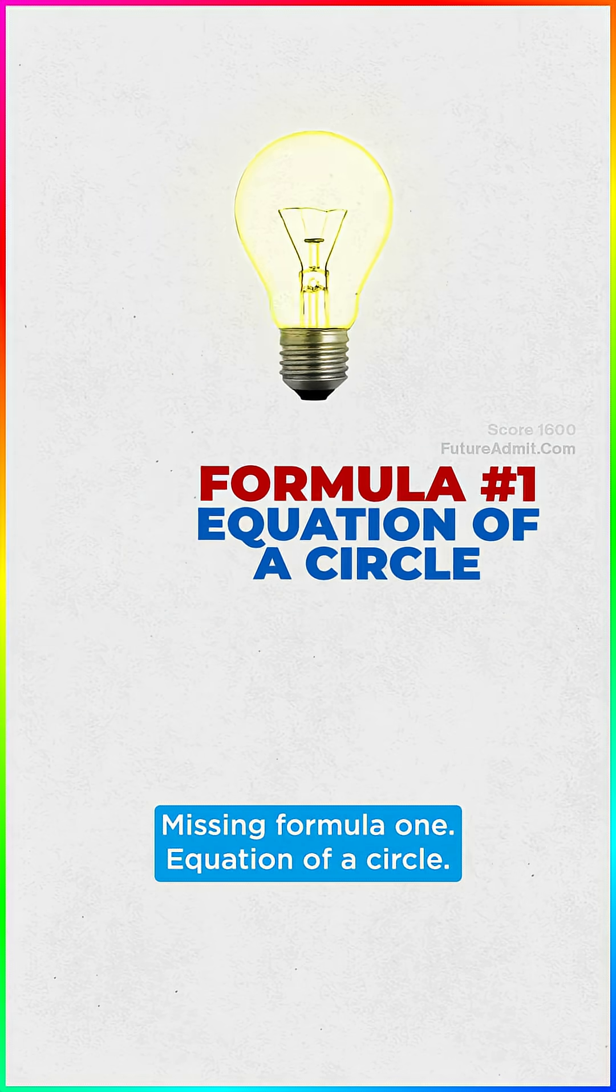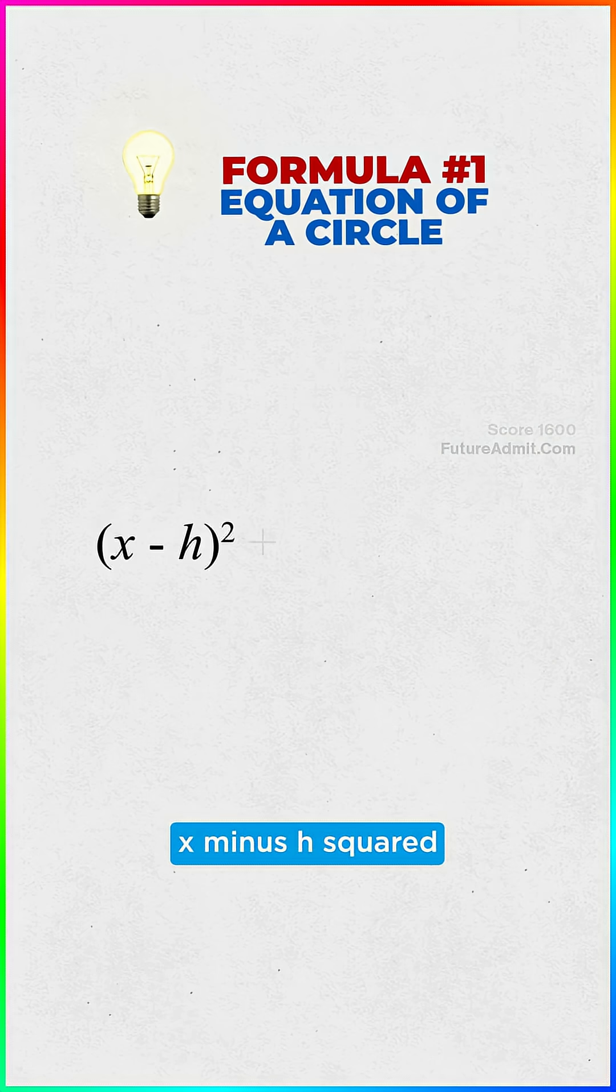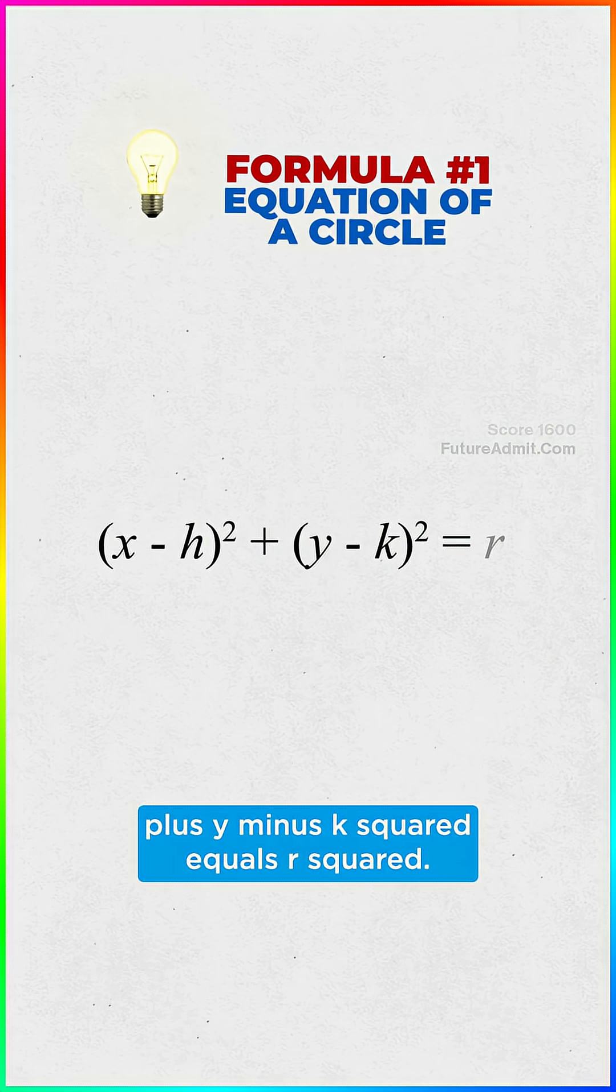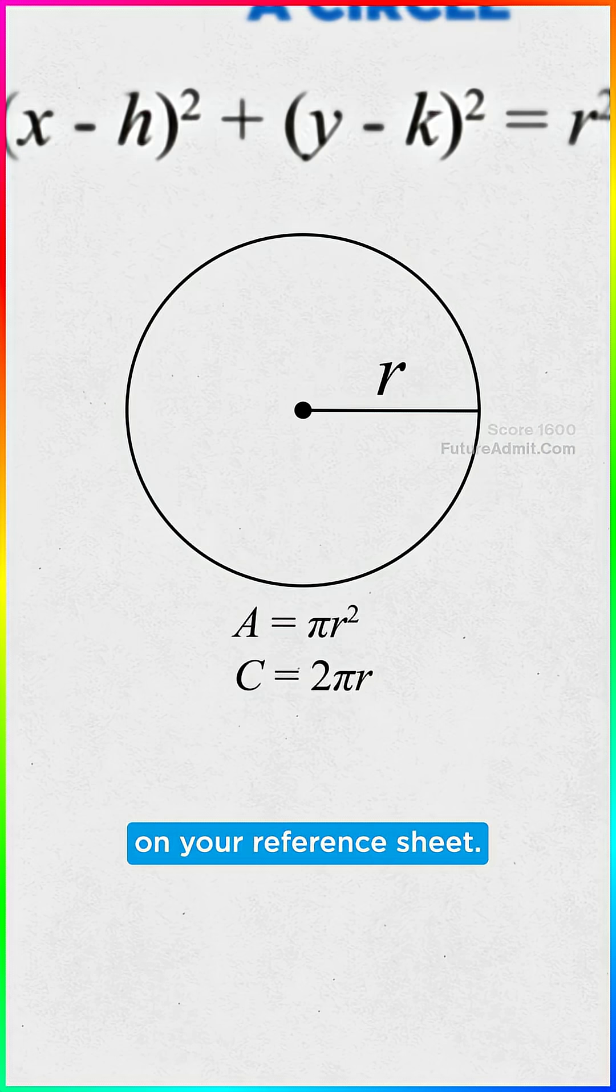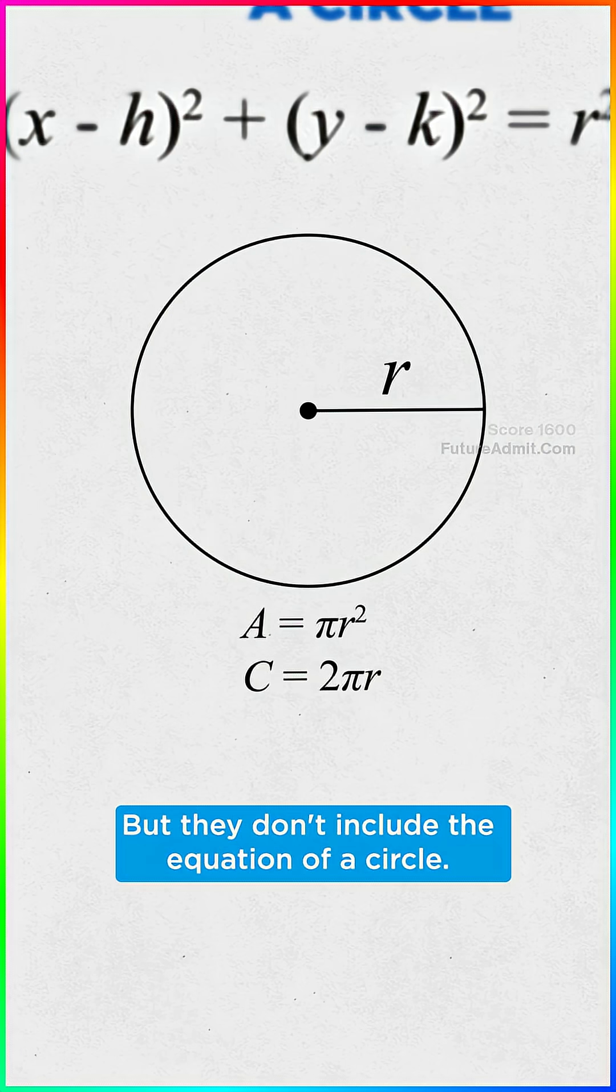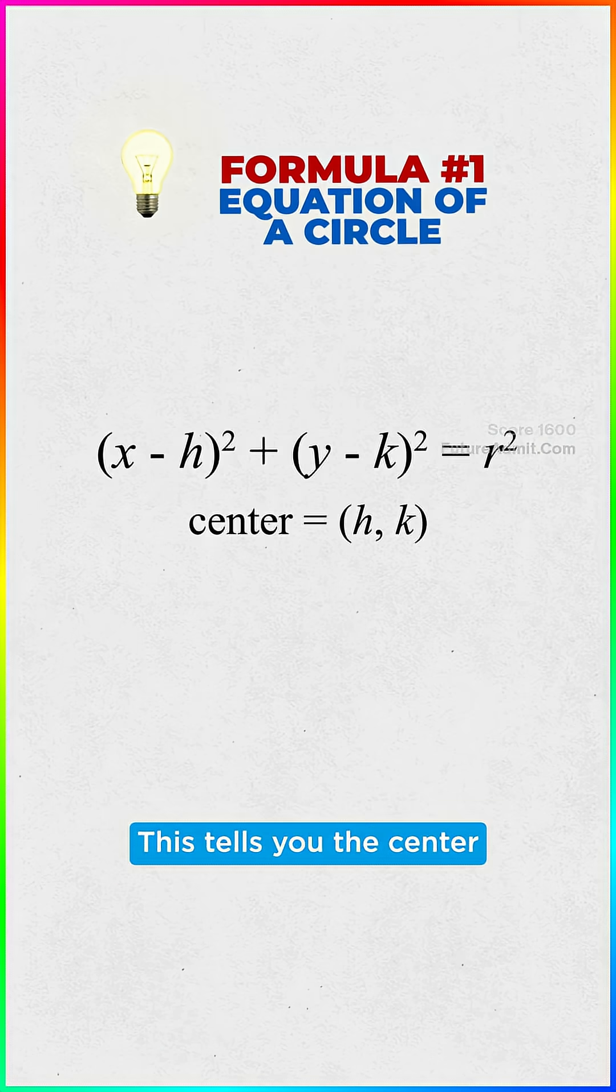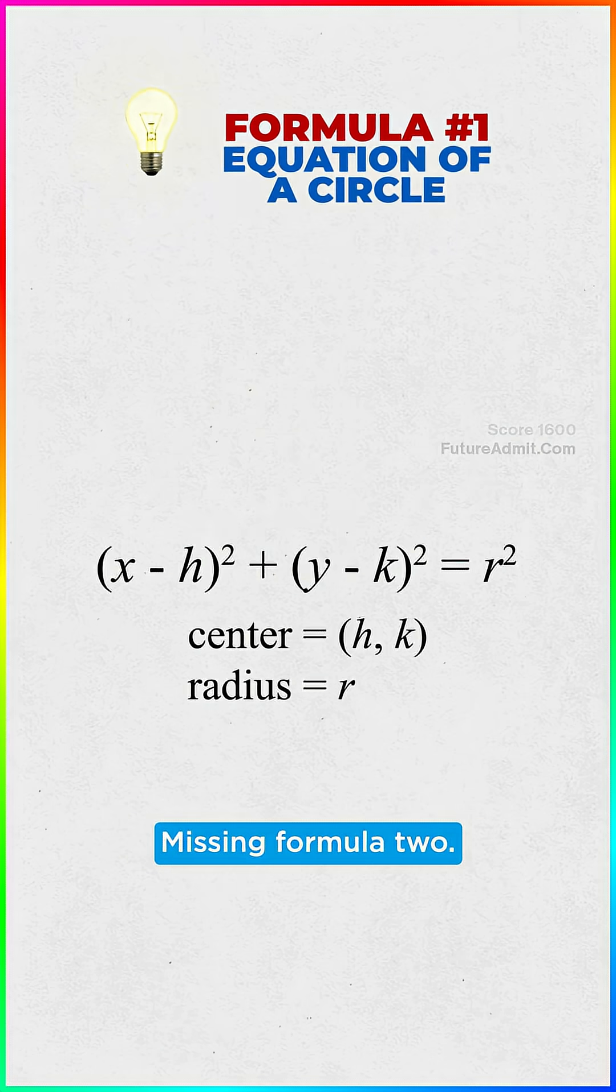Missing Formula 1, equation of a circle: x minus h squared plus y minus k squared equals r squared. College Board gives you the area of a circle on your reference sheet, but they don't include the equation of a circle. This tells you the center and the radius of the circle.